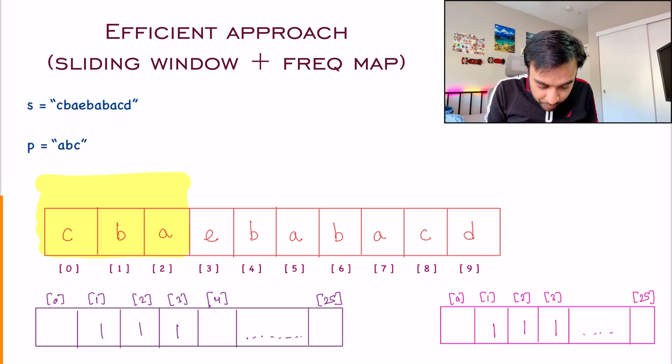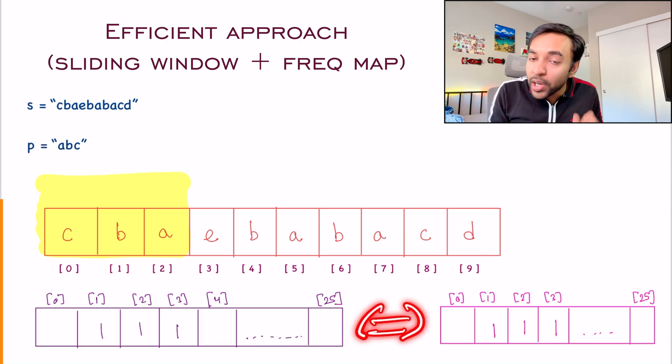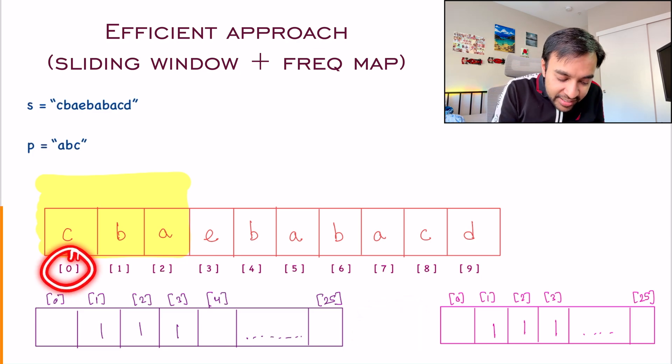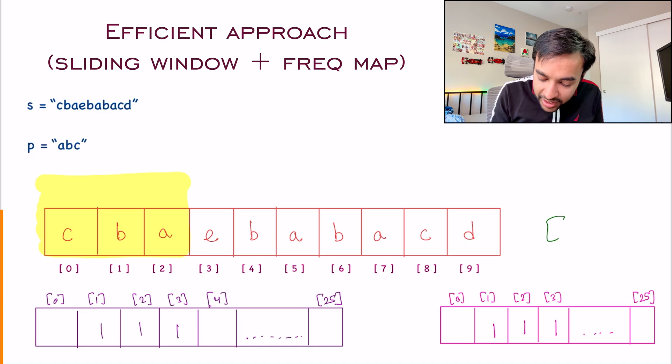What will happen next? You found that these two arrays are the same. As soon as they are same, you add this zero to your result set. And now what do you do next? You slide the window one character ahead.